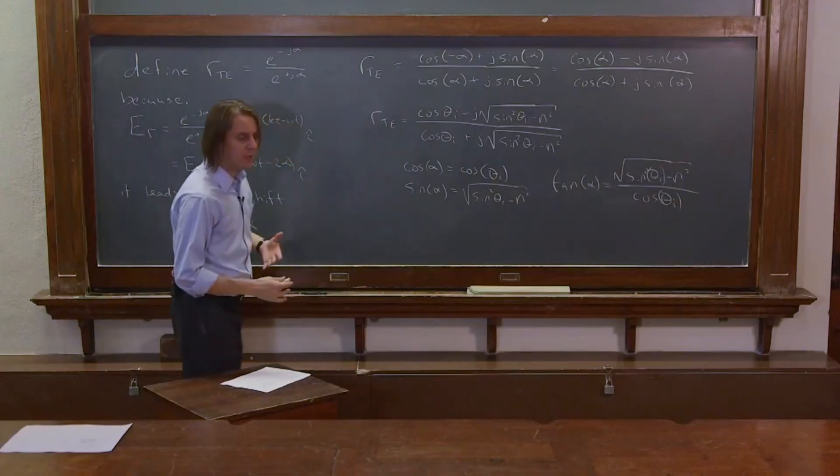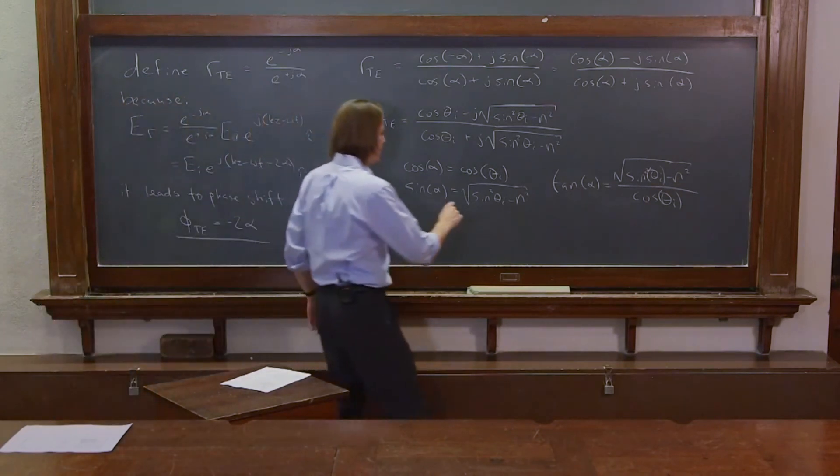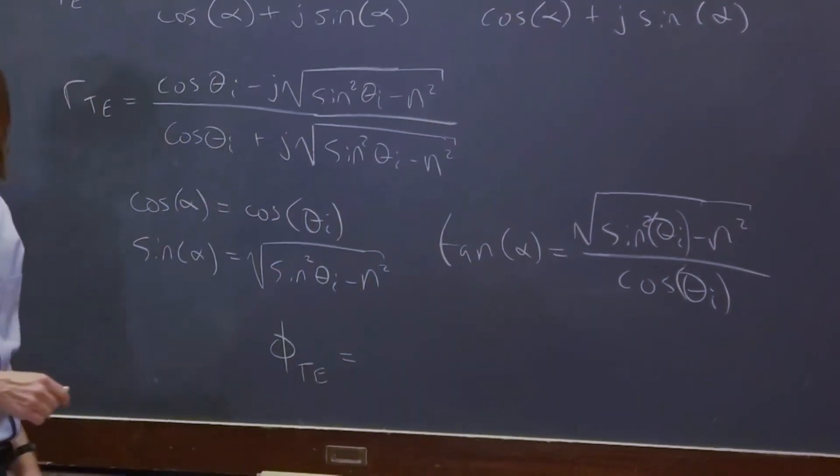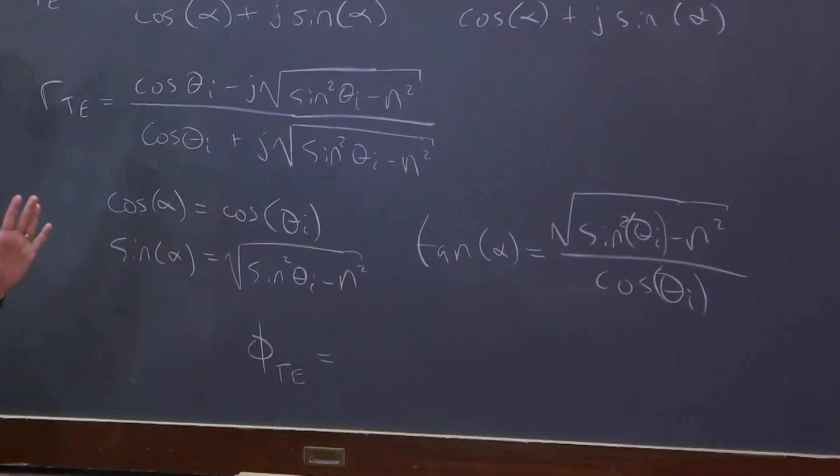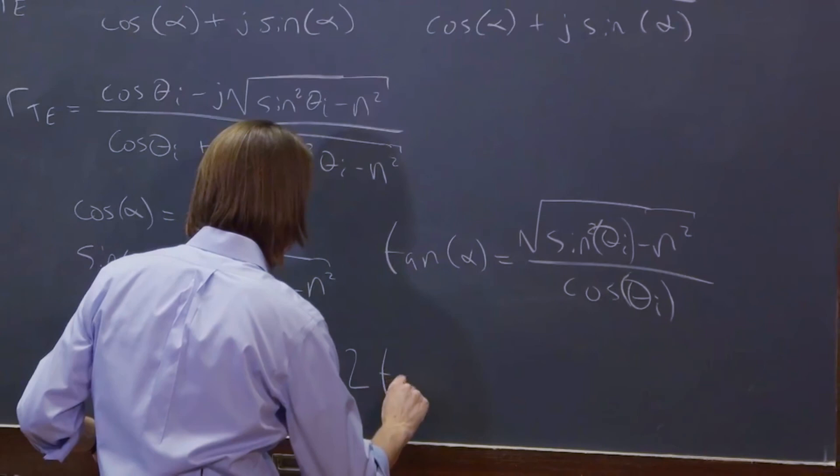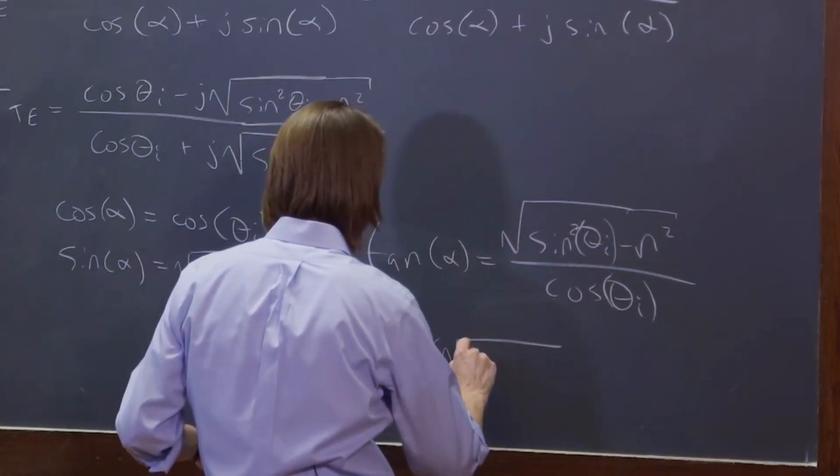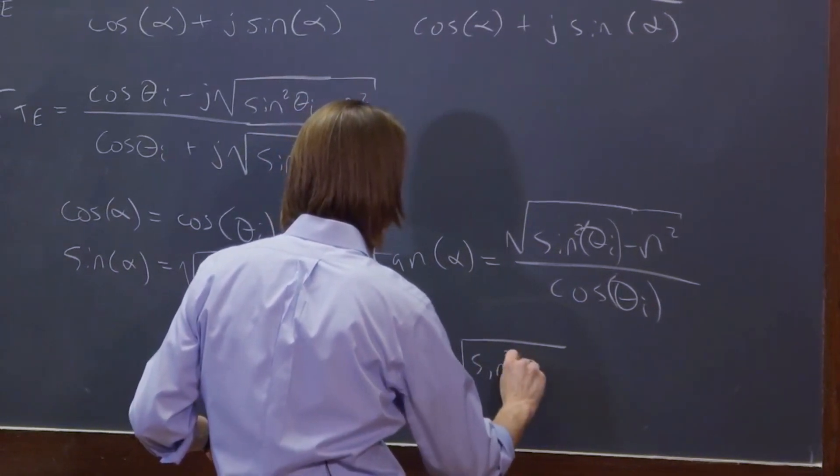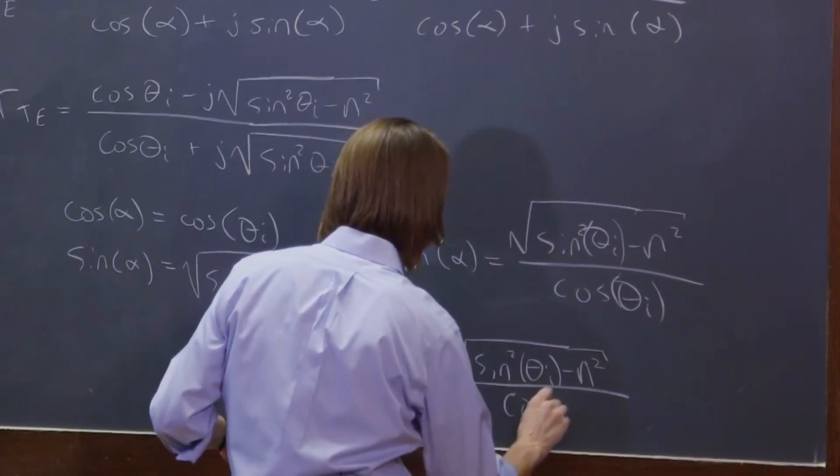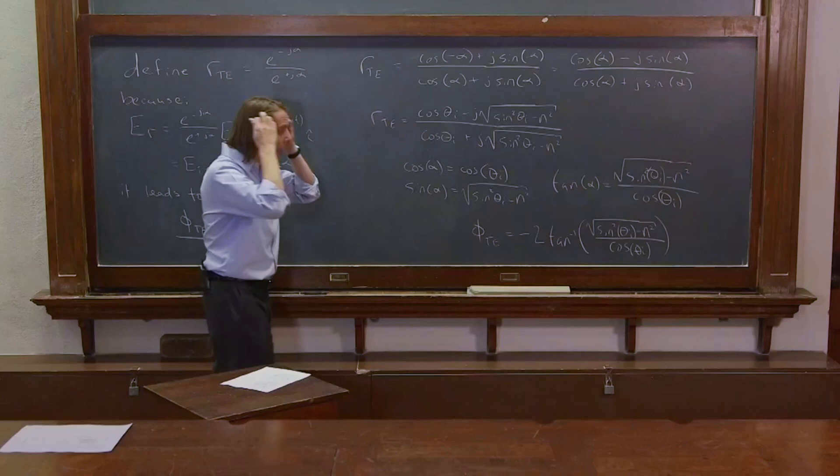But, and then if you want to go all the way to the phase, you remember that the phase was minus 2 times alpha. So finally, you get that the phase shift of the TE light in the total internal reflected region at large angles is equal to minus 2 times the inverse tangent of the square root of sine squared theta i minus n squared over cosine theta i. And there's the phase shift.